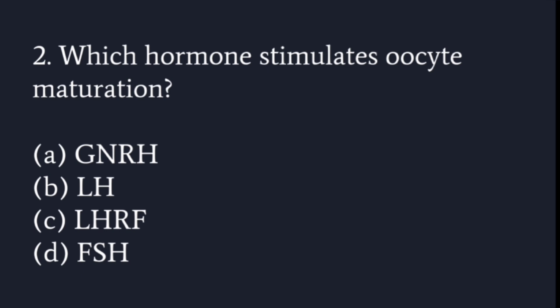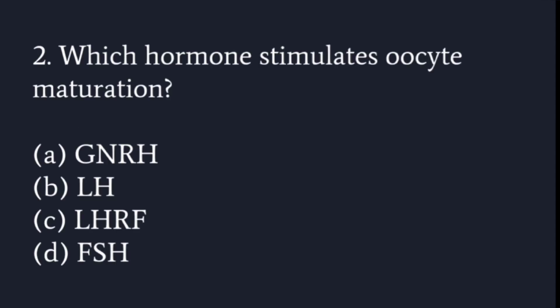Next question: which hormone stimulates oocyte maturation? The options are GnRH, LH, LHRF, or FSH. The answer is FSH — follicle stimulating hormone. GnRH stands for gonadotropin releasing hormone, LH/LHRF stands for luteinizing hormone releasing hormone, and FSH is follicle stimulating hormone.